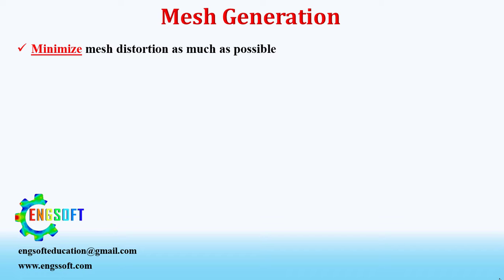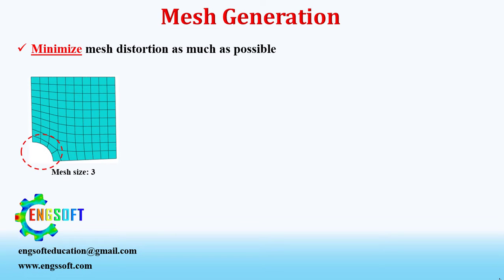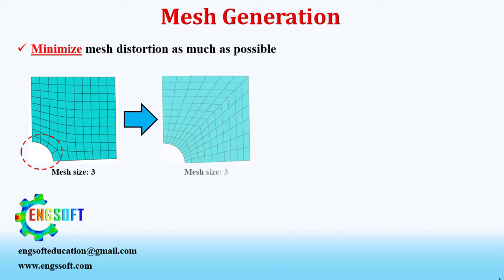As the first recommendation, minimize mesh distortion as much as possible. Mesh distortion does exist in parts with complex geometry. It is highly recommended to mesh the part with quadrilateral or brick elements as much as possible. Minimizing mesh distortion can be done through partitioning the part or refining the mesh size.